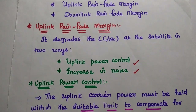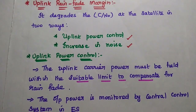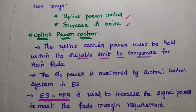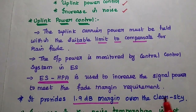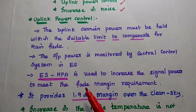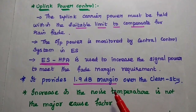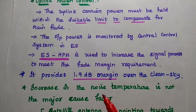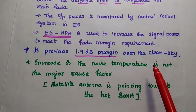The uplink power loss can be recovered using the uplink power control method. The uplink carrier power must be chosen within a suitable limit to compensate for rain fading. The output power from the earth station is monitored by the central control system. The High Power Amplifier (HPA) is used to increase the signal power to meet the fade margin requirement, amplifying the signal to the required level to compensate the rain fade margin, providing a 1.9 dB margin over the clear sky condition.